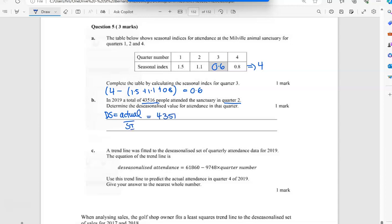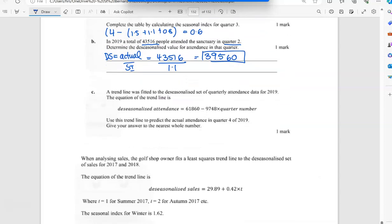So de-seasonalized is actual over seasonal index. So they told me that actual was 43,522, and the seasonal index for quarter two I can read up there is 1.1. So we end up with 39,565. These were people attending, so you definitely would have a whole number. Round to a whole number.